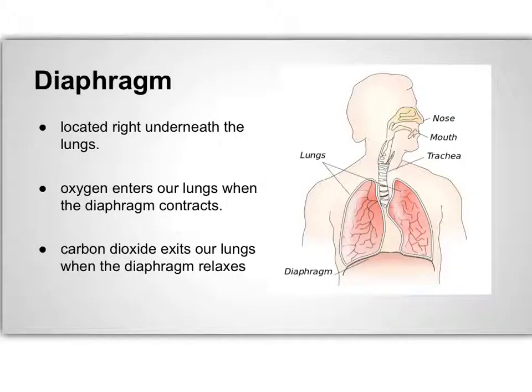The diaphragm is a dome-shaped muscle and tissue that is located directly underneath the lungs. The diaphragm separates the thoracic cavity that holds the heart and lungs from the abdominal cavity. When the diaphragm contracts downward, the volume of the thoracic cavity increases, allowing air to enter the lungs. When the diaphragm relaxes upward, the volume of the thoracic cavity decreases, allowing carbon dioxide to exit the lungs.